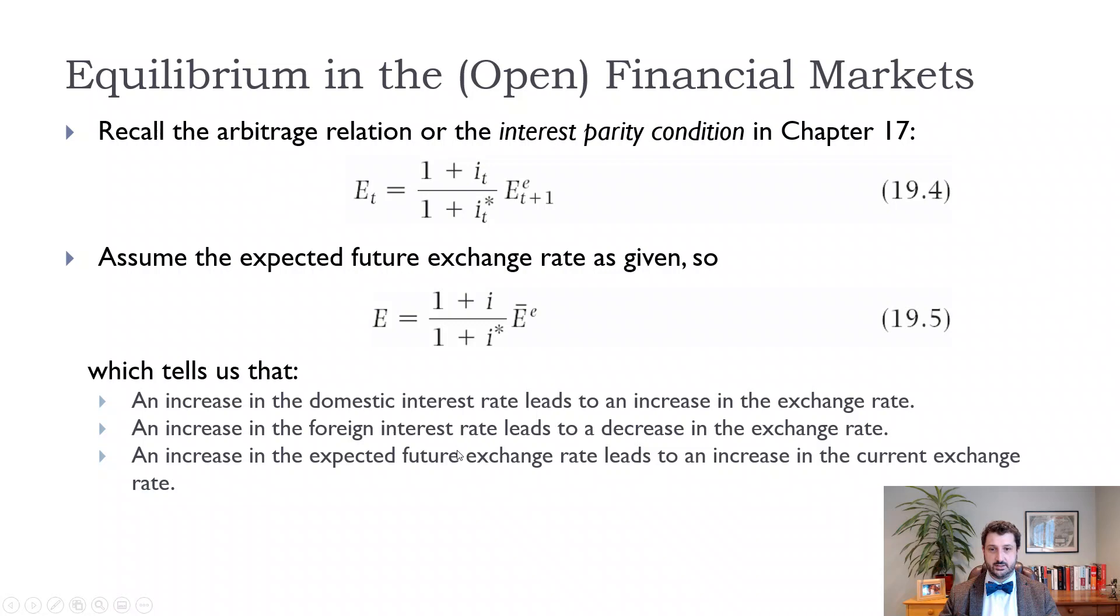First, we want to think a little bit about what happens in emerging countries when there are changes in interest rates. A sudden stop in an emerging economy occurs when the interest parity fails. There are differences in the interest rates, and that changes the exchange rate. The exchange rate fell a lot.